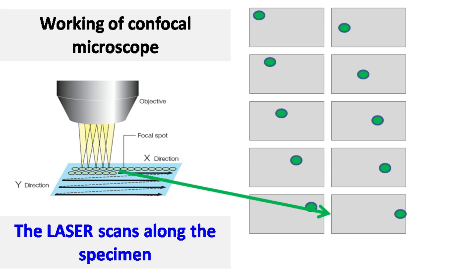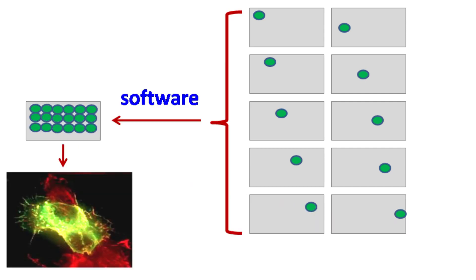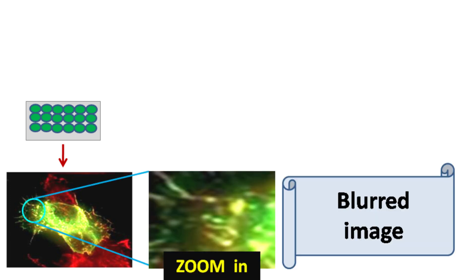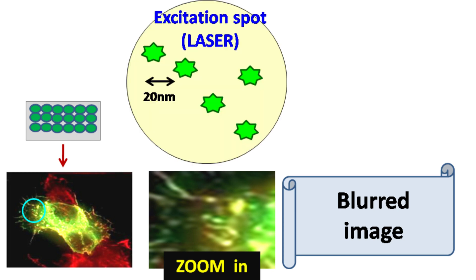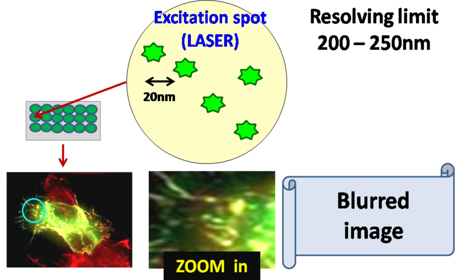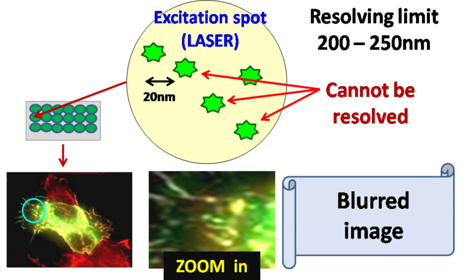These images are combined into a single image using software. Now here comes an interesting thing — what if we zoom the confocal image and try to see the fluorescence of the single excitation spot? When we do this, the image gets blurred. This is because a single excitation spot of the laser can have many closely spaced fluorescent molecules that cannot be resolved.